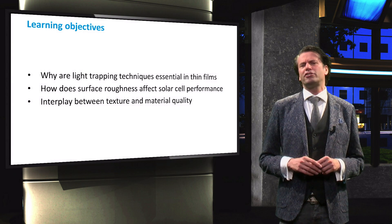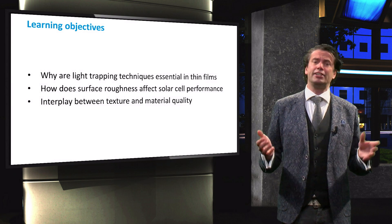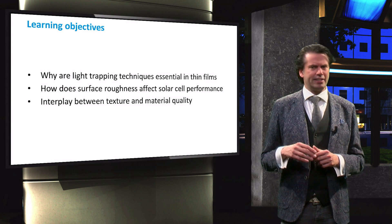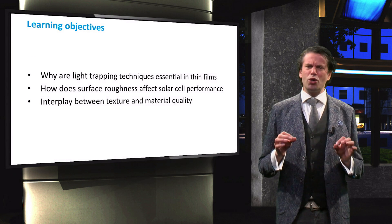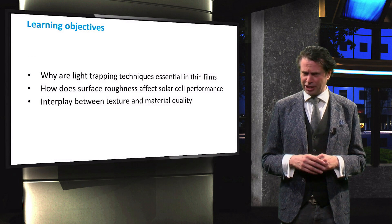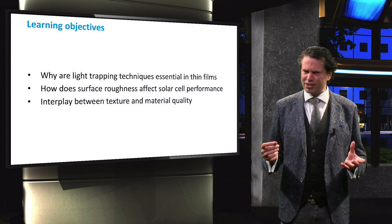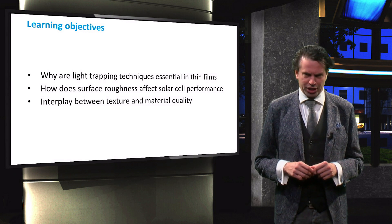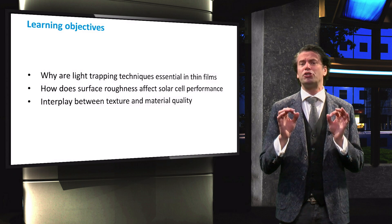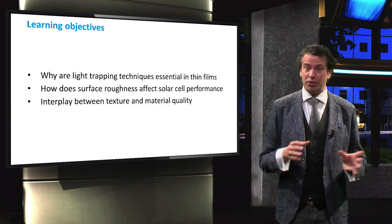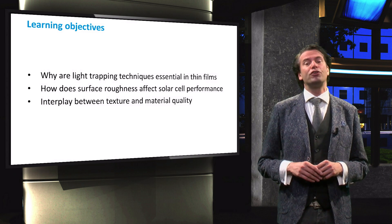The learning objectives for this video are first to understand the necessity for light trapping techniques in thin films. We will then look at the different kinds of surface texturing applied and their effect on the performance of a solar cell. Finally, we will discuss the delicate interplay between texture and the quality of the absorber layers.